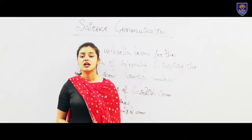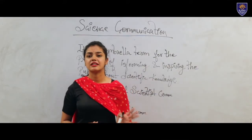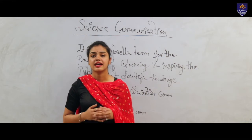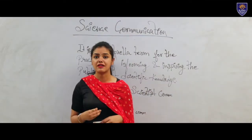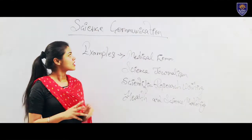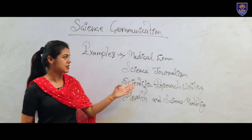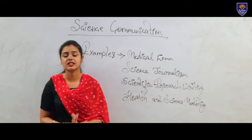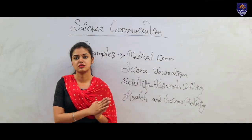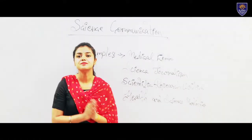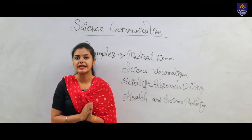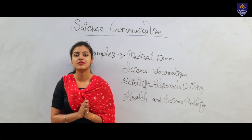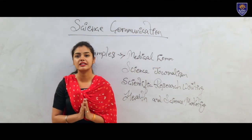In science journalism, journalists should have knowledge about what types of inventions are happening in the field of science and technology. Before writing any scientific content or communicating to the audience, we should have information about the scientific things. Examples of science communication include medical communication, science journalism, scientific research writing, and health and science marketing. As a science journalist, you must have knowledge about scientific things; without it, you can't write any type of news.